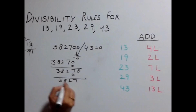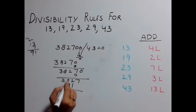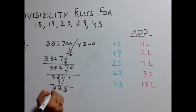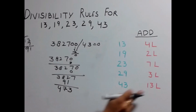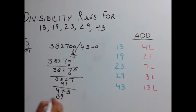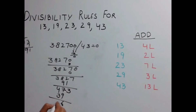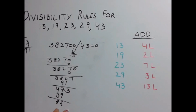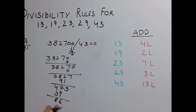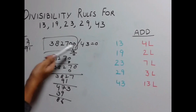Adding 91 to the remaining number gives 473. Again, multiply the last digit 3 by 13: 3 × 13 = 39. Adding 39 gives 86. Is 86 divisible by 43? Yes — so this number is also divisible by 43.